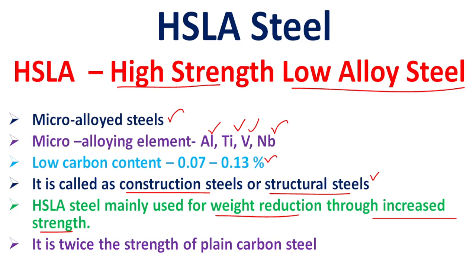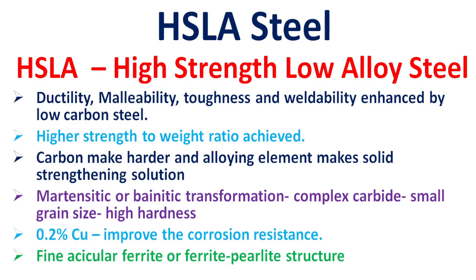The strength of HSLA steel is twice that of plain carbon steel — two times larger. Because of this, it is called high strength low alloy steel. HSLA steel also has high ductility.